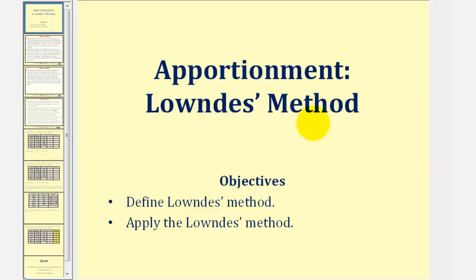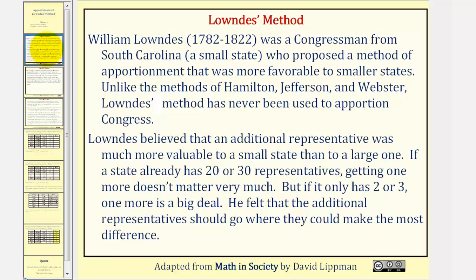Welcome to a lesson on Lowndes' method of apportionment. William Lowndes was a congressman from South Carolina, a small state, who proposed a method of apportionment that was more favorable to smaller states. Unlike the methods of Hamilton, Jefferson, and Webster, Lowndes' method was never used to apportion congress.